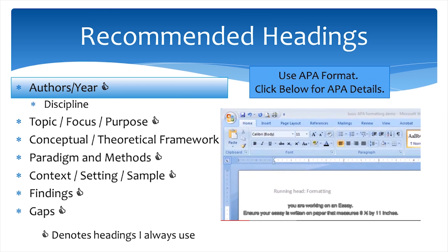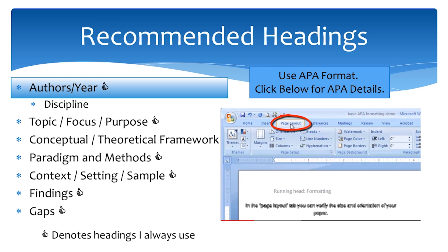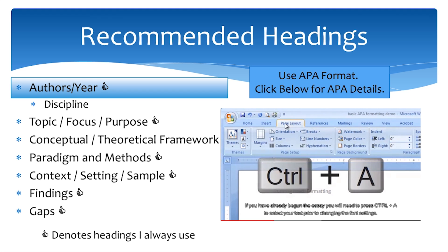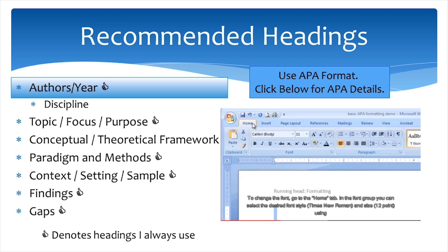In the first column, always list the author and year of publication. To make things easier, you will also want to save your articles in a folder on your hard drive by the author and year of publication. I will often also note the country that the study was conducted in. That way, it is easy for me to quickly identify if more research is needed in my country specific to the topic of inquiry.